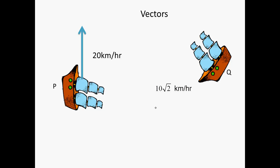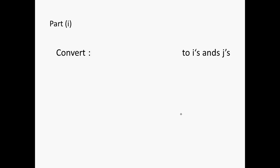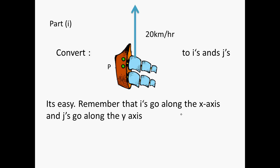Now, vectors, we can look at that one there. It's 20 kilometers per hour north. This one here, 10 root 2 at an angle of 45 degrees. So to convert this into I's and J's, it's quite easy. You have to remember that I's go along the x-axis and J's go along the y-axis. So that will be equal to plus 20J. There's no I component because it doesn't go along the east-west line at all.